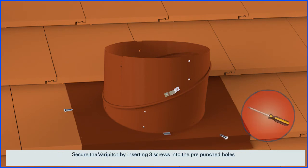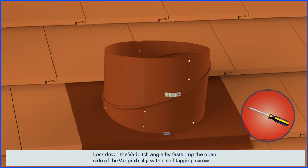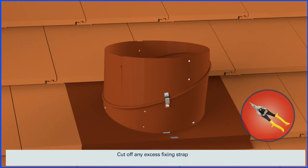Secure the VeriPitch by inserting three screws into the pre-punched holes. Lock down the VeriPitch angle by fastening the open side of the VeriPitch clip with a self-tapping screw. Cut off any excess fixing strap.